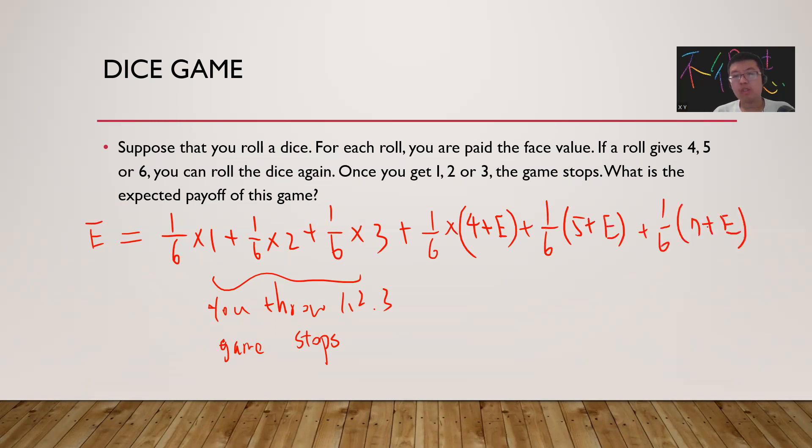So the expectation value equals 1/6 times (15 + 3E). This gives us 6E = 6 + 15 + 3E.